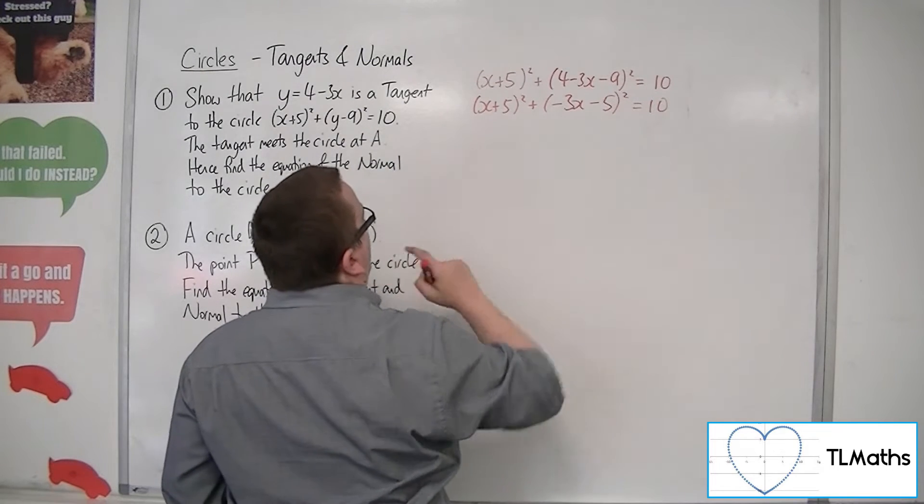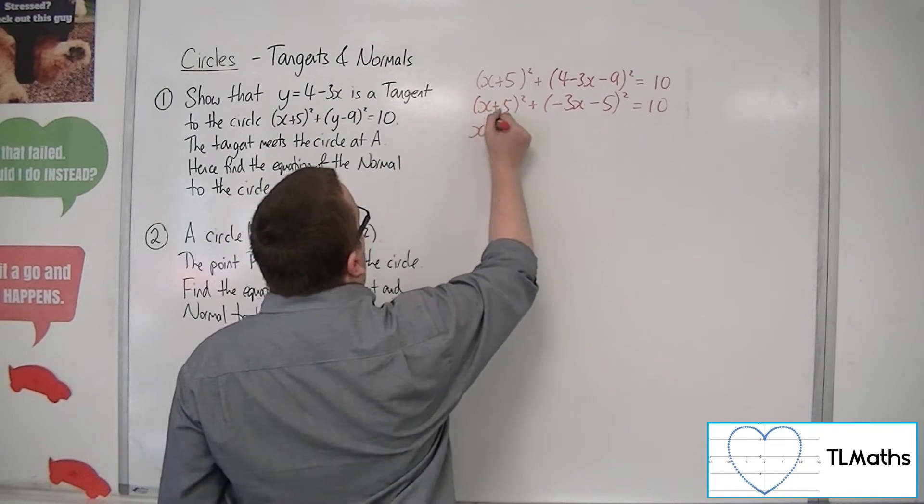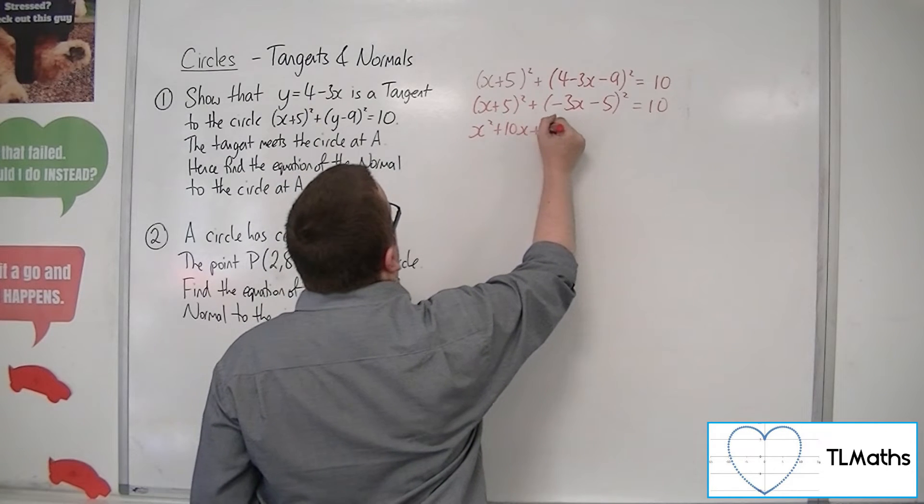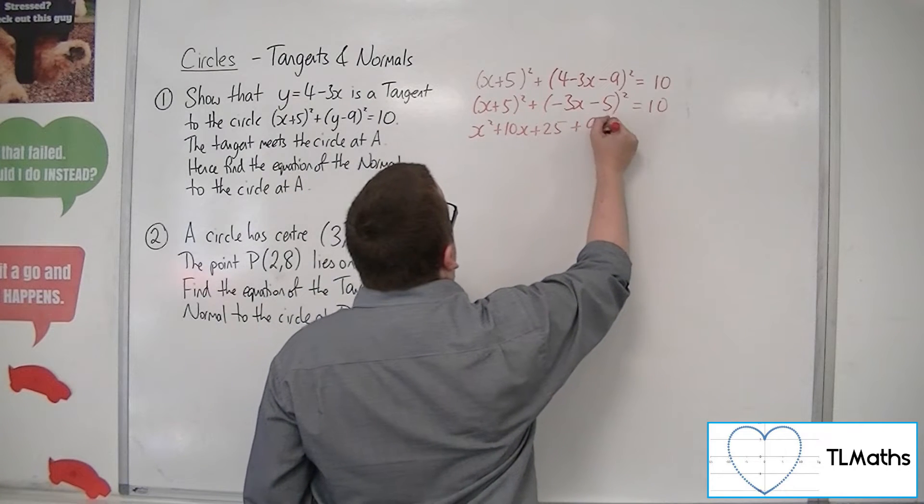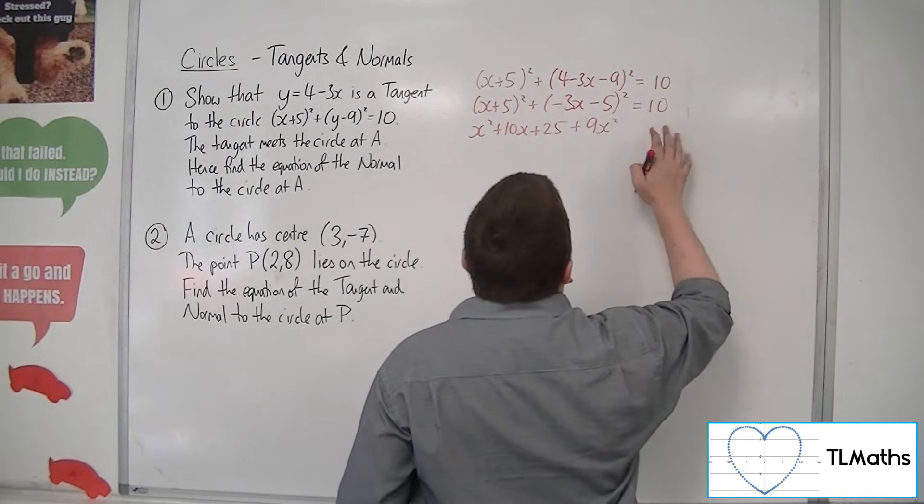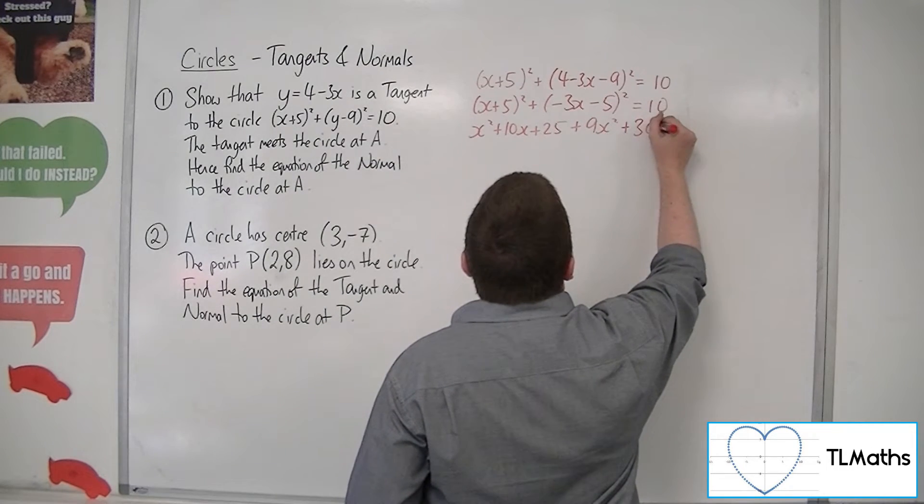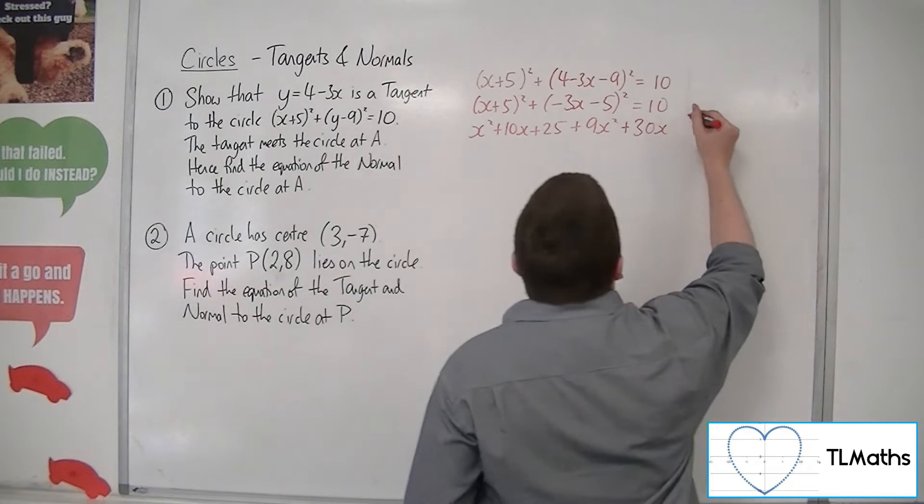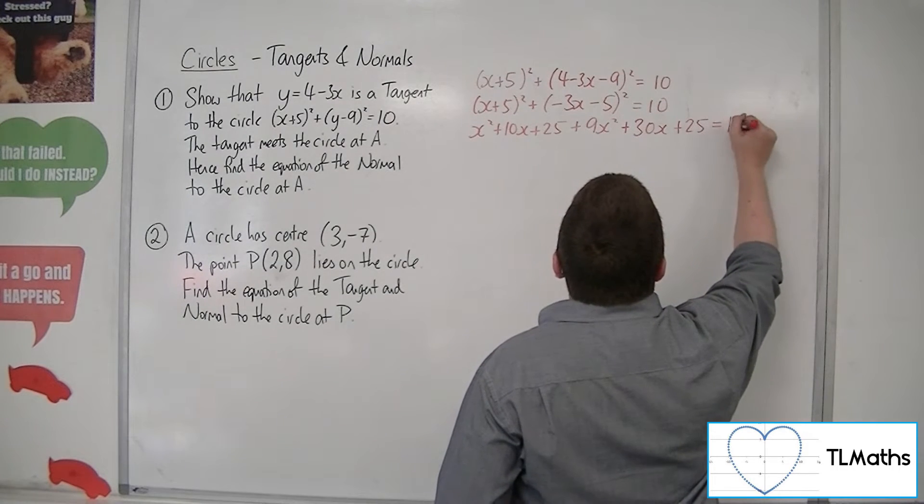So now let's multiply out the brackets. x squared plus 10x plus 25 plus 9x squared. We've got minus 3x times minus 5, so 15x twice, so 30x. Then we've got the minus 5 squared, so plus 25 is equal to 10.